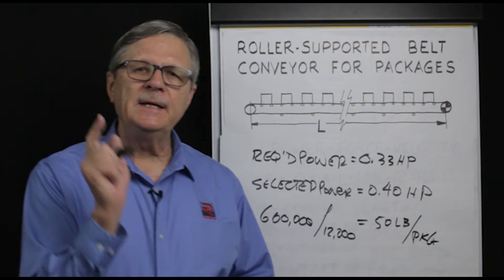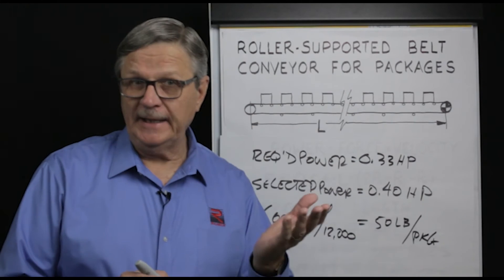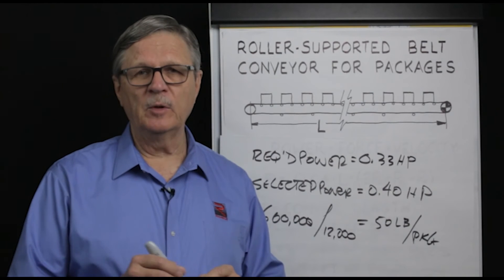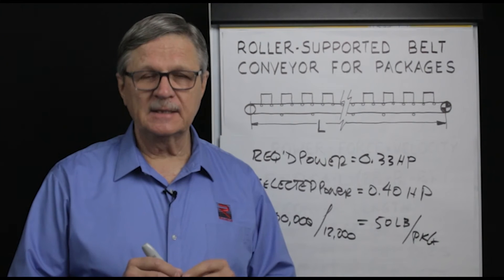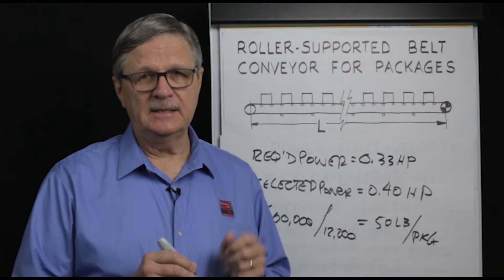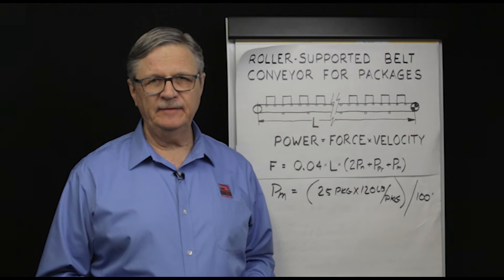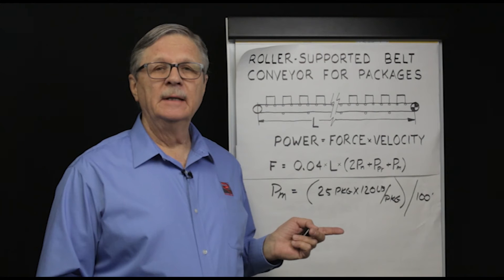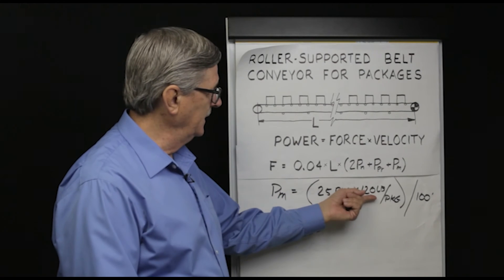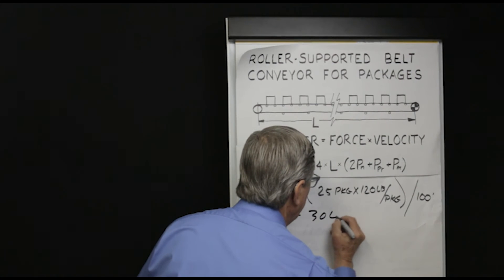On further inspection, we find that the plan is from 8 to 10 a.m. to move 120-pound boxes, and from 10 a.m. to the end of the eight-hour shift to move packages at 26.67 pounds per box. Let's plug in the product weight per foot based on 120 pounds per box. With 25 packages on the conveyor at any point in time, each weighing 120 pounds, divided by 100 feet of conveyor, PM equals 30 pounds per foot of product.